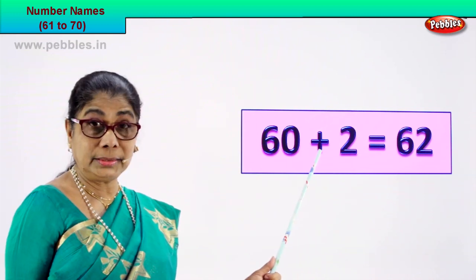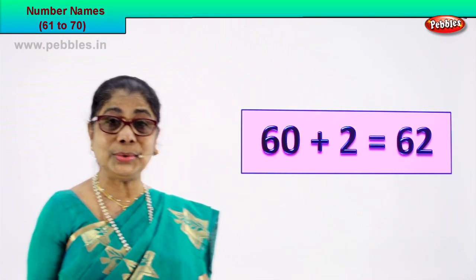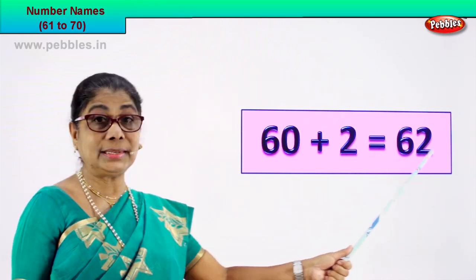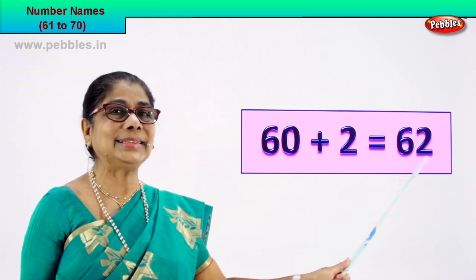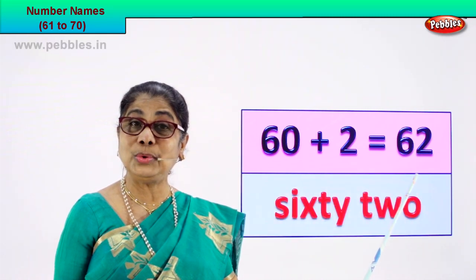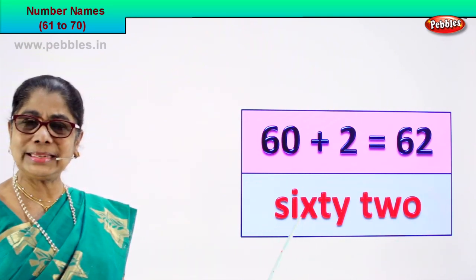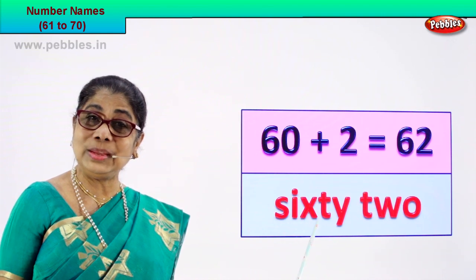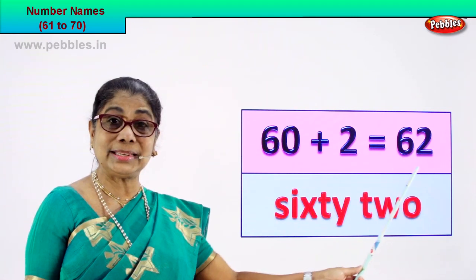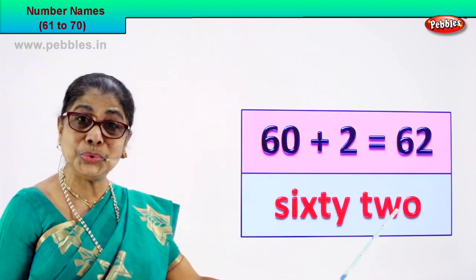60 plus 2 is equal to 62. How do we get 62? 60 plus 2 is equal to 62. 6 and 2, 62. That's the numeral. Now how do we write the name of 62? Spell and write. You know the 60 spelling — just add 2. S-I-X-T-Y, 60. T-W-O, 2. 6 and 2, 62 is the numeral and the name is sixty-two.